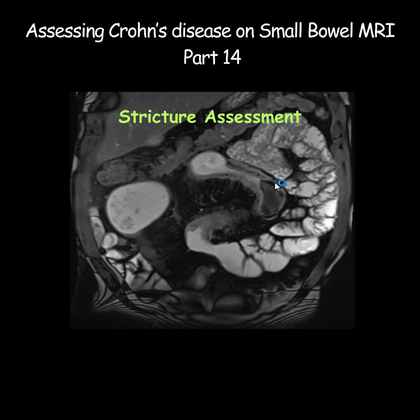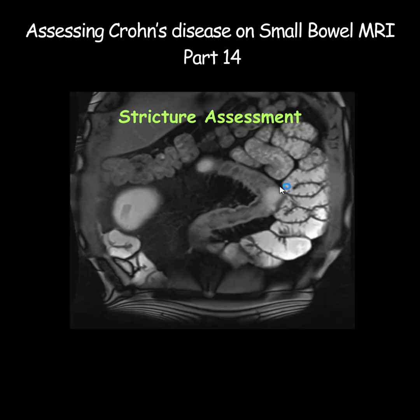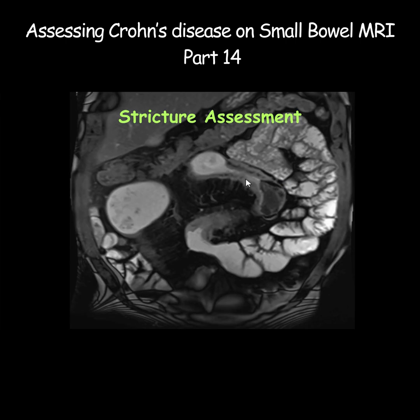Remember that sometimes even with the presence of strictures you wouldn't see pre-stenotic dilatation, and that's when the small bowel is being decompressed by some other way — by the presence of fistulae or sinuses. For instance, if this segment is strictured and there is some decompression going on by this loop fistulae with another small bowel loop, then the proximal small bowel wouldn't have enough pressure on it to cause pre-stenotic dilatation.